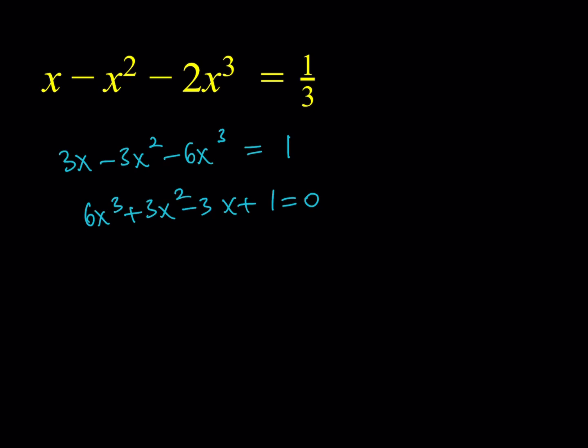So for that purpose, I'm going to arrange my equation a little differently. After I distribute the 3, I'd like to keep 3x minus 3x squared on the left-hand side. I'd like to subtract 1 and put the 6x cubed on the other side.